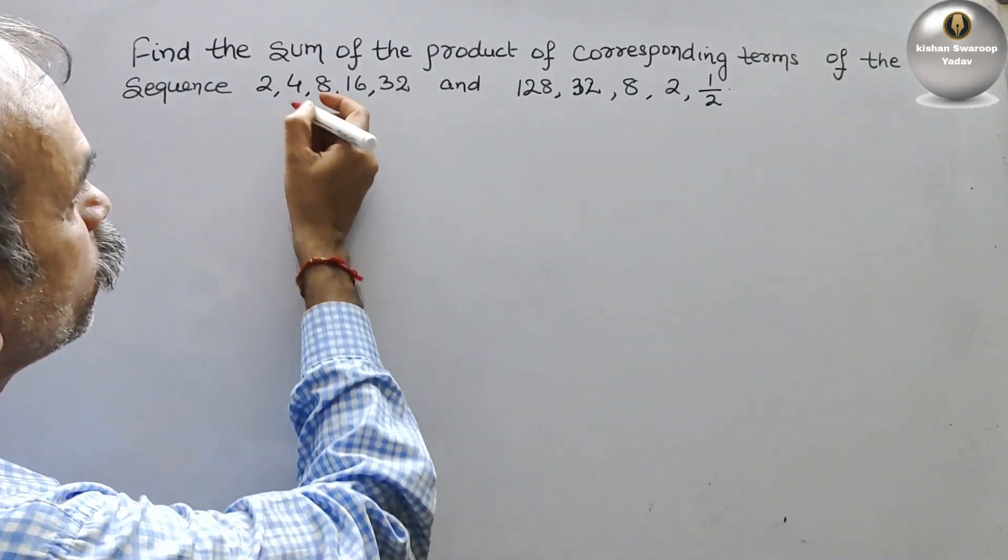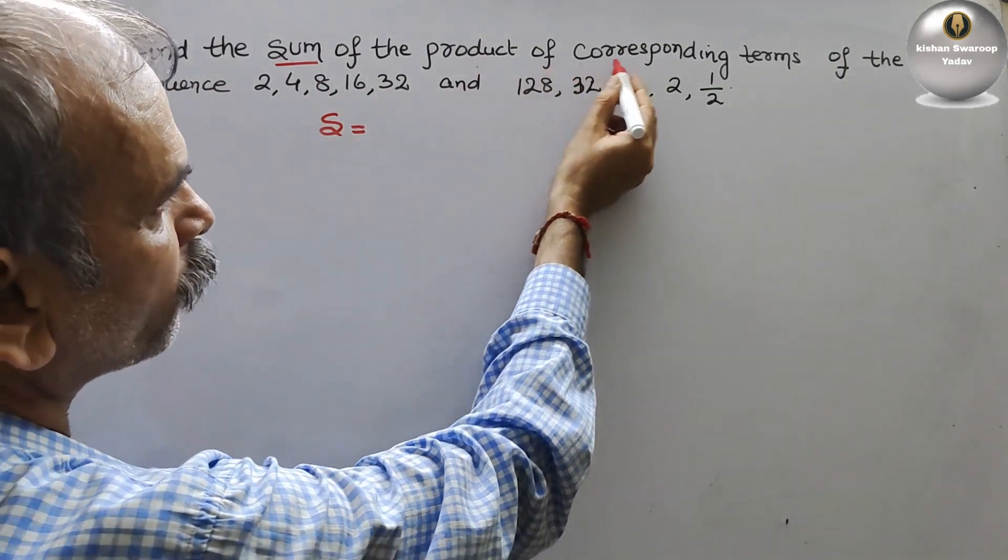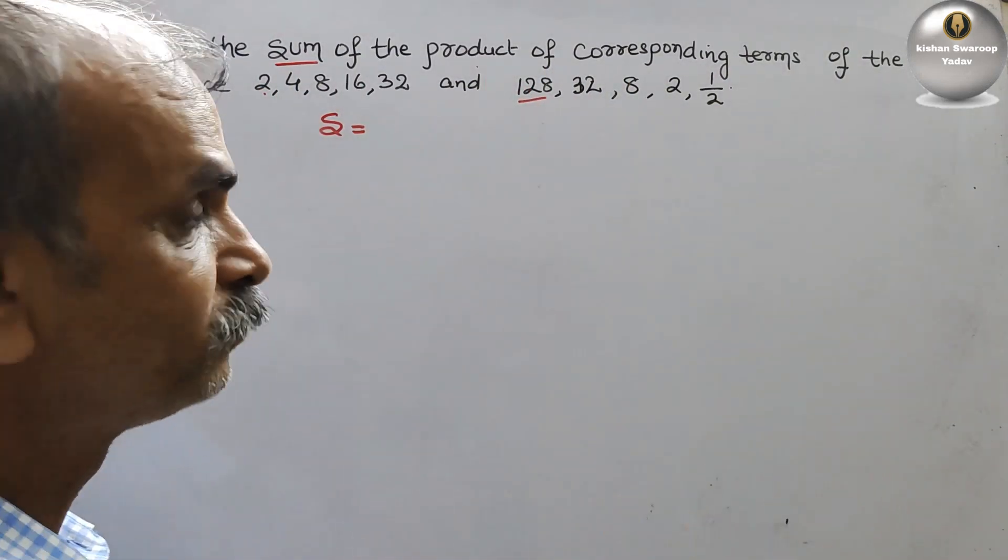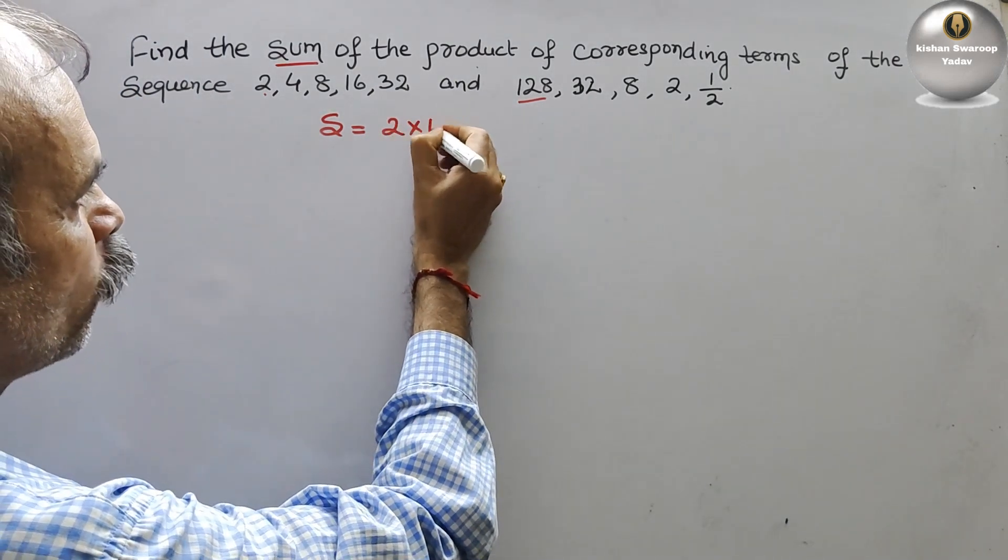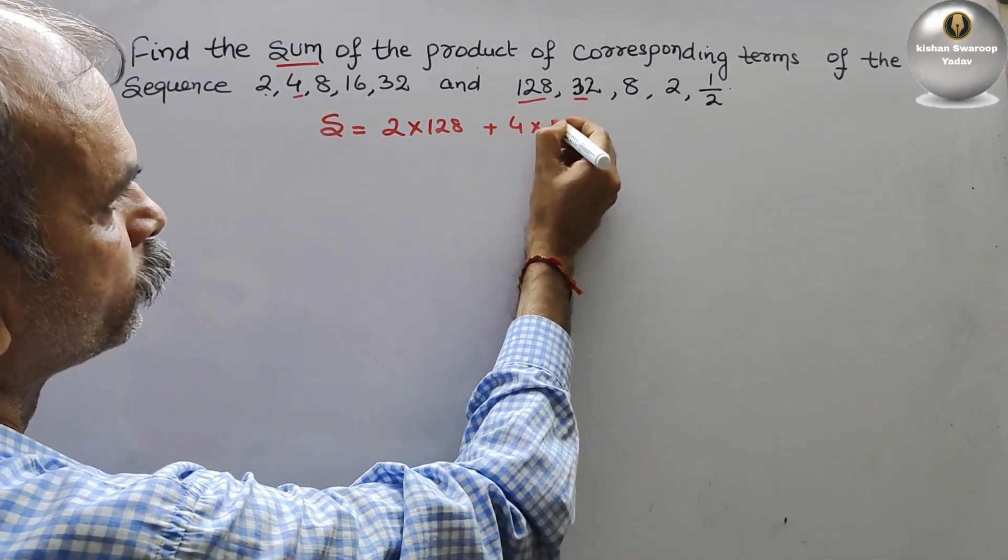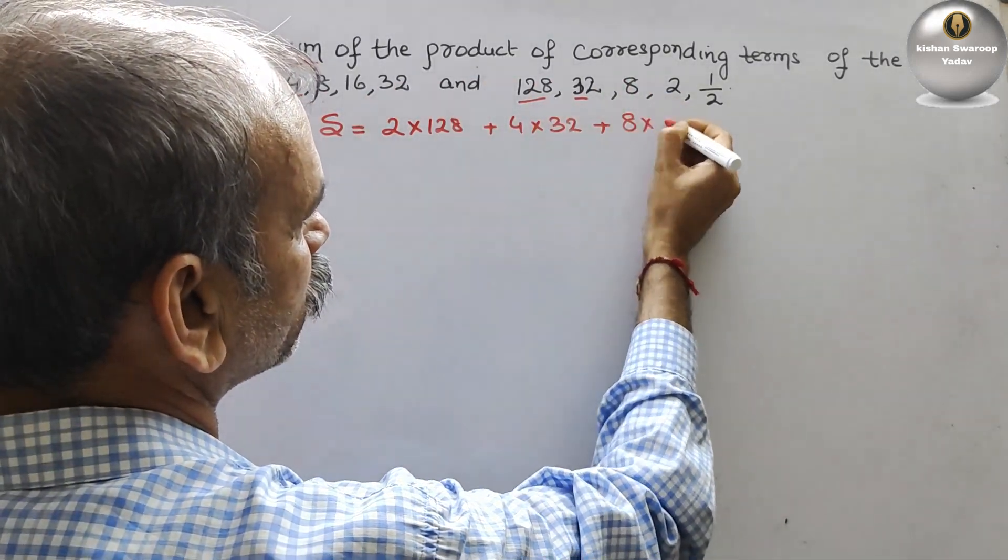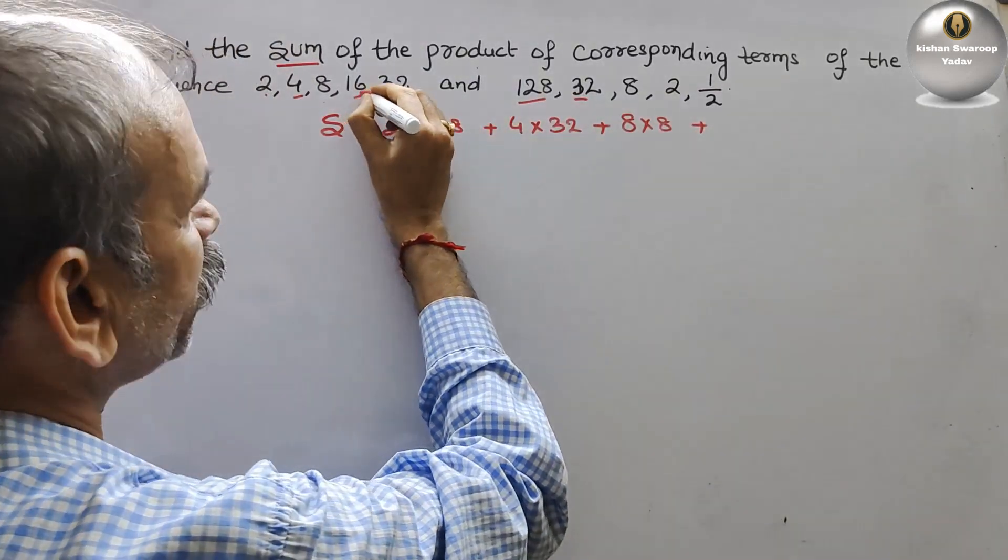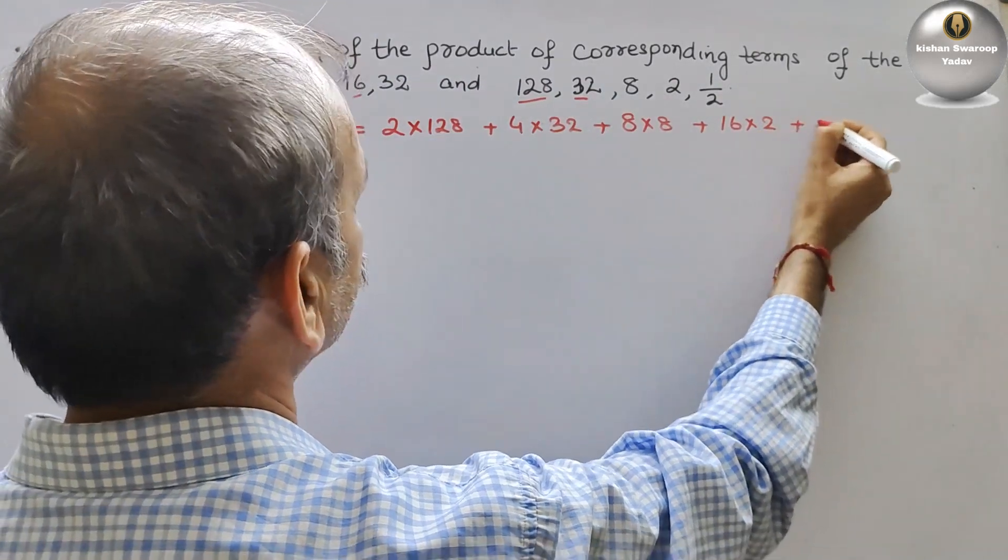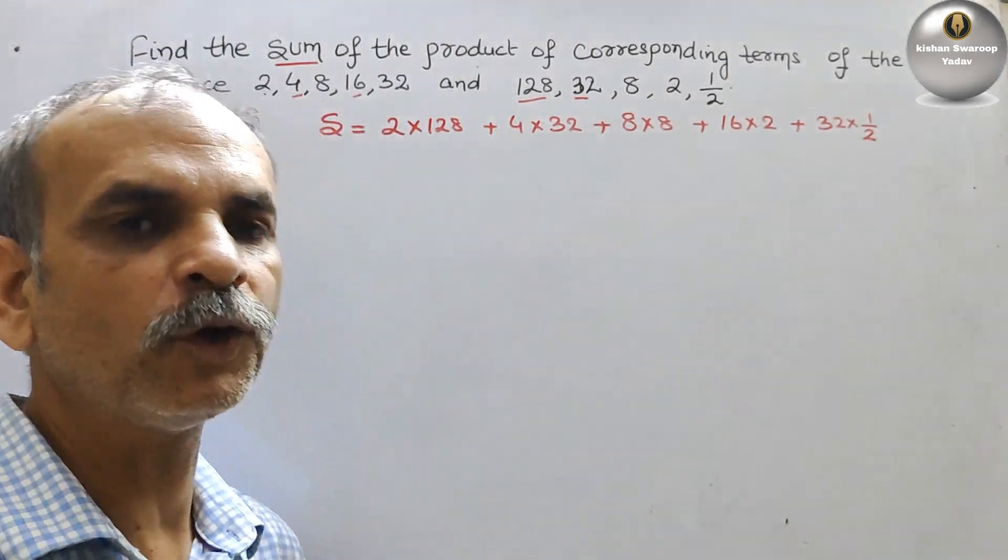We have to find the sum S, which equals the product of corresponding terms. First term to first term. So we write S = 2×128 + 4×32 + 8×8 + 16×2 + 32×(1/2).